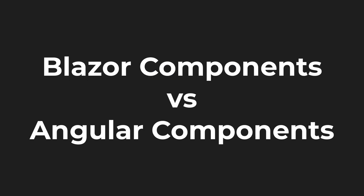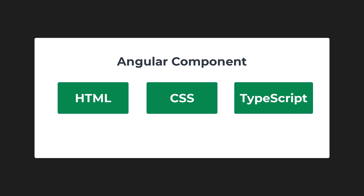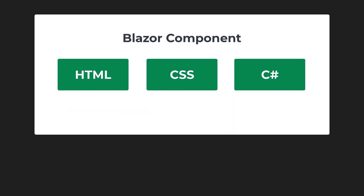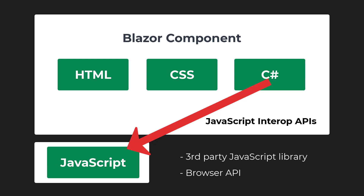If we compare Blazor with other component-based frameworks like Angular, components in Angular are made up of HTML, CSS, and JavaScript — or rather a superset of JavaScript called TypeScript — whereas components in Blazor are made up of HTML, CSS, and C#. If we want to talk to JavaScript, maybe to consume a third-party JavaScript library or to invoke a browser API, we can do so using the JavaScript interop APIs available in Blazor.